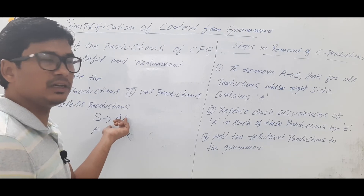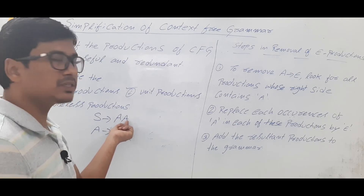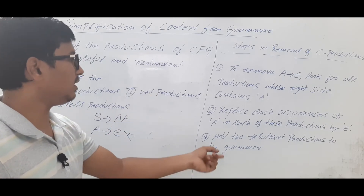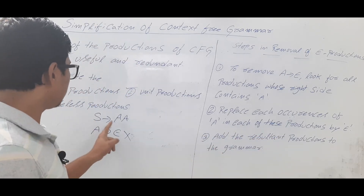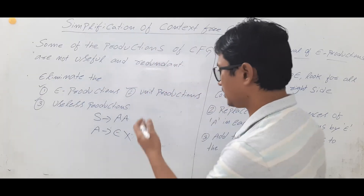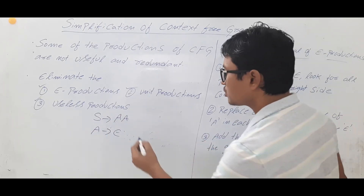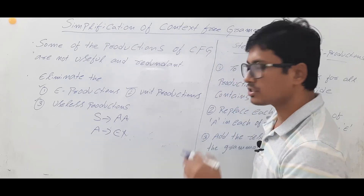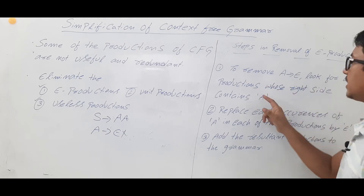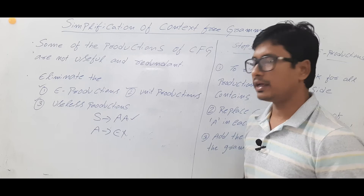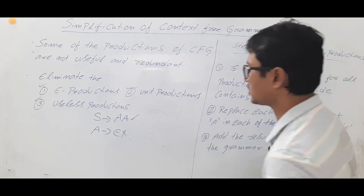Replace each occurrence of A in those productions with epsilon and add the resultant production to the grammar. For example, with S determines AA: if you replace the first A with epsilon you get S determines A; if you replace the second A with epsilon you also get S determines A — these are the same, so keep only one. If you replace both with epsilon you get S determines epsilon.